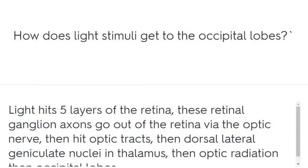How does light stimuli get to the occipital lobes? Light hits the five layers of the retina. The retinal ganglion axons go out of the retina via the optic nerve, then hit optic tracts, then the dorsal lateral geniculate nuclei in the thalamus, then optic radiation, then the occipital lobes.